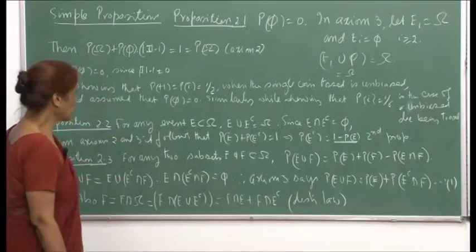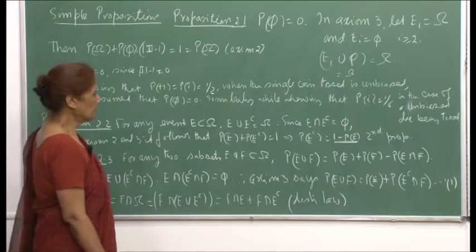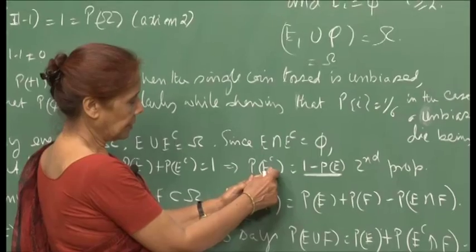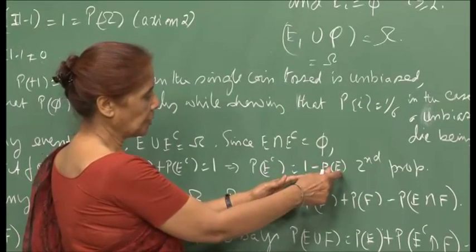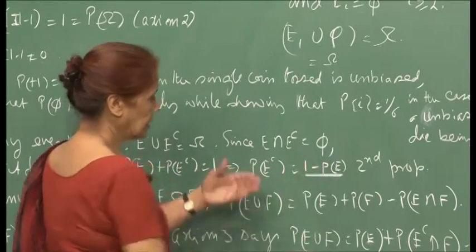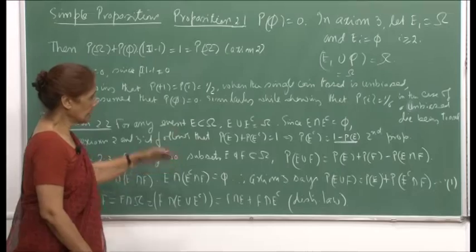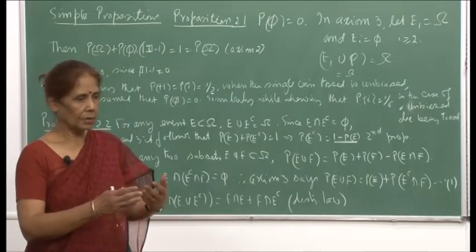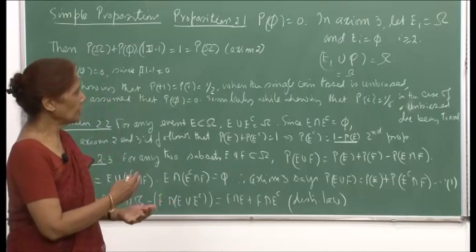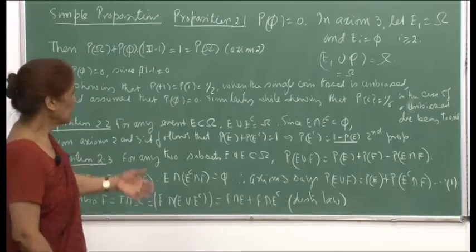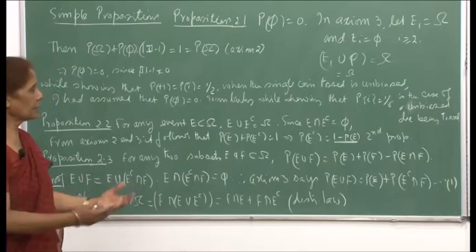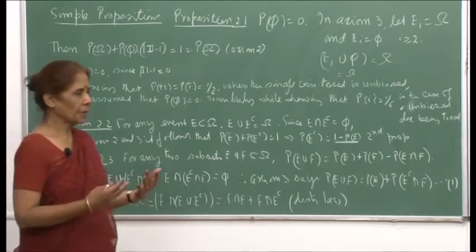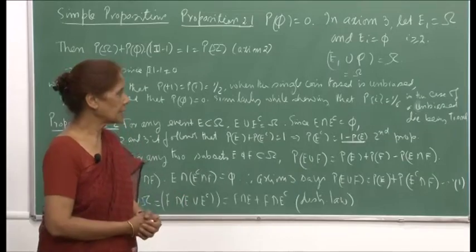Proposition 2 states that the probability of the complement of event E is 1 minus the probability of event E. This can be very simply derived. The attempt here is to show that once you define the axioms and use them logically, you can derive many results and build up a good structure.